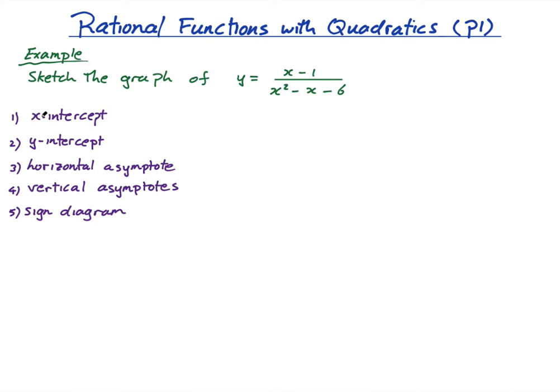I've listed five steps of what we need to do in order to sketch this. The lesson is basically just about sketching, but once you sketch it, you can do all the other things like solve equations or inequalities. So this lesson will focus on sketching to get an idea of what it looks like. The first step is the x-intercepts — let's do them step by step.